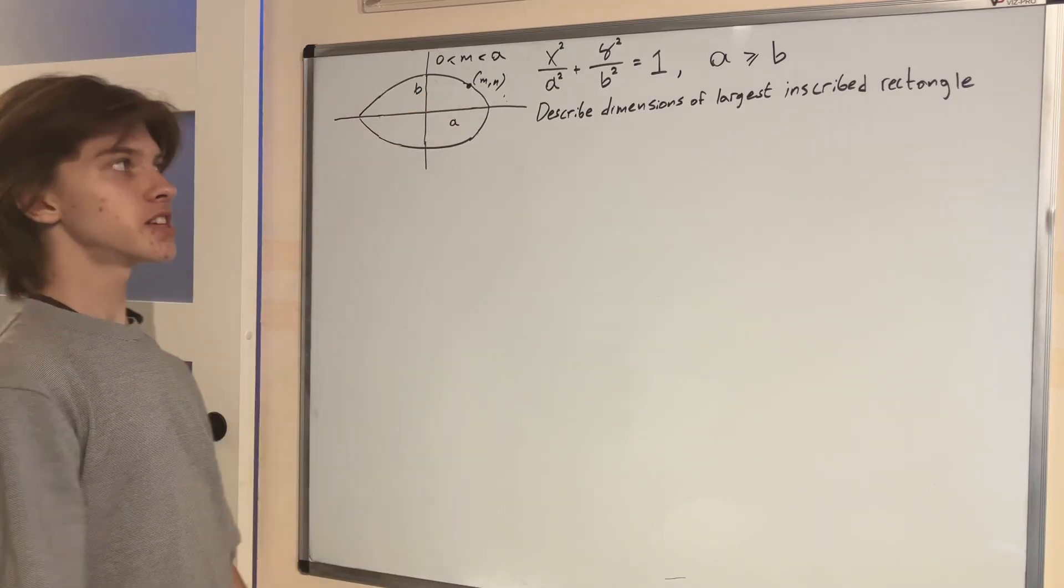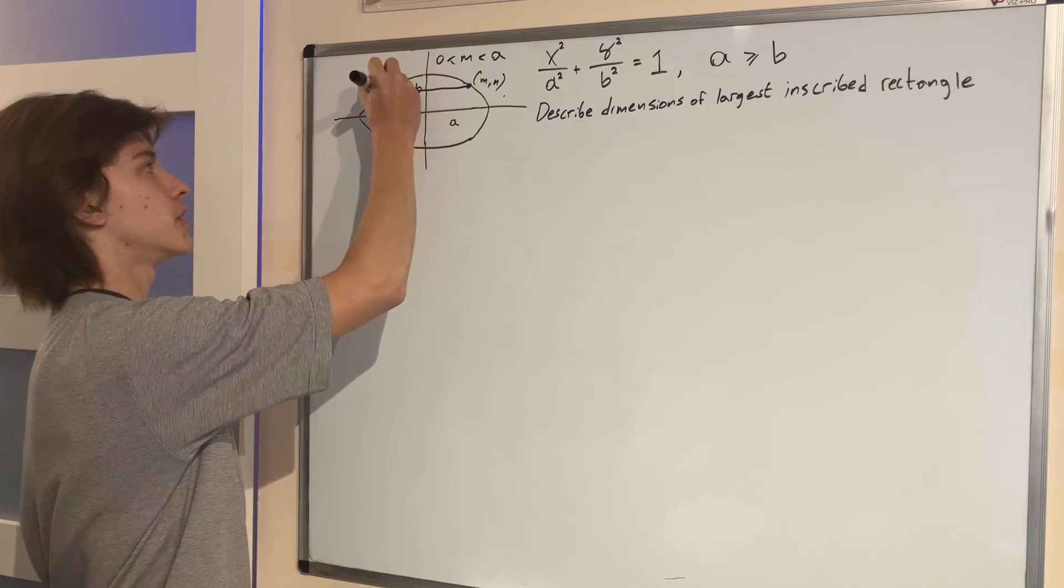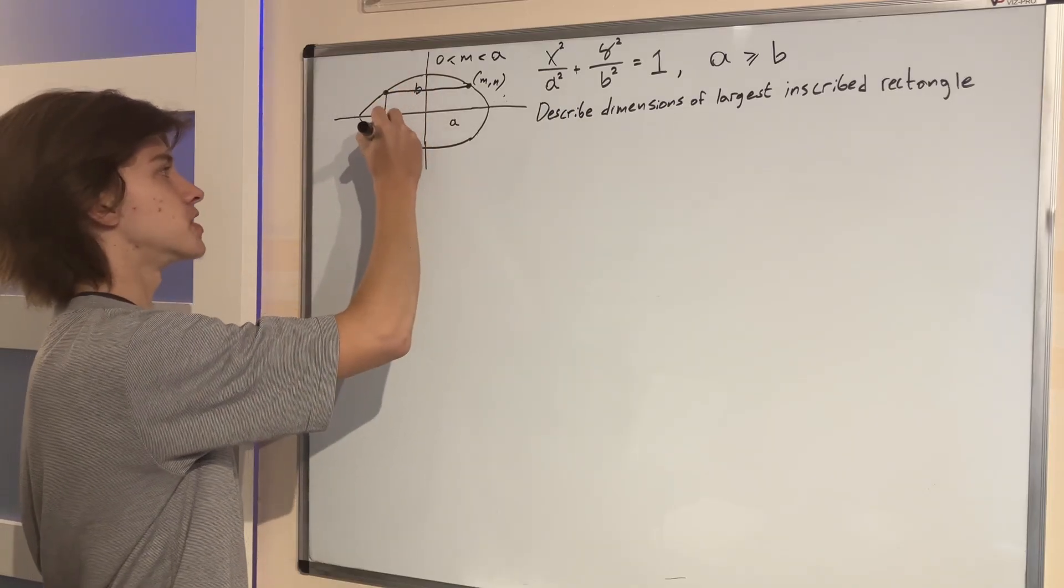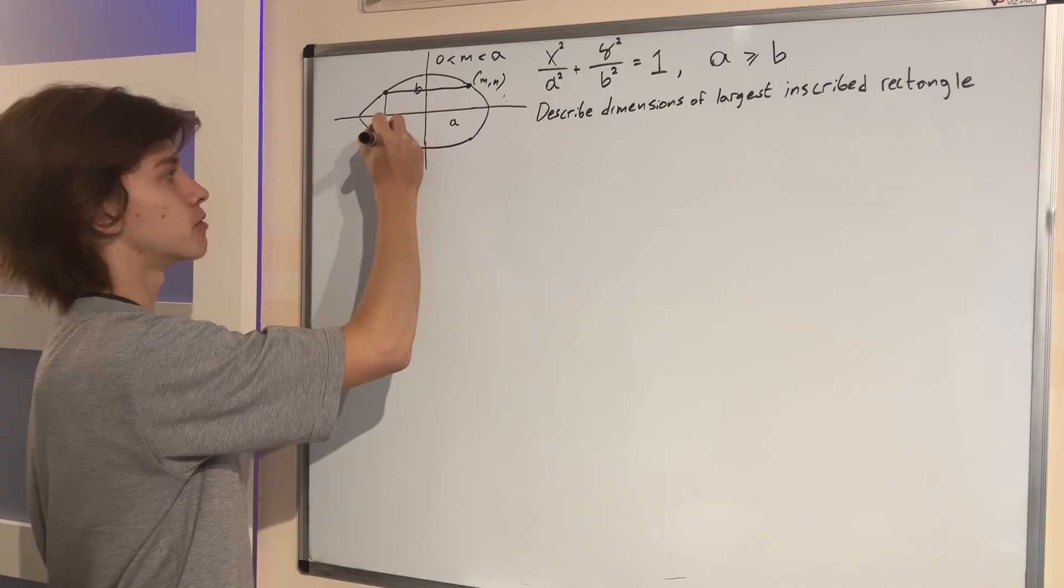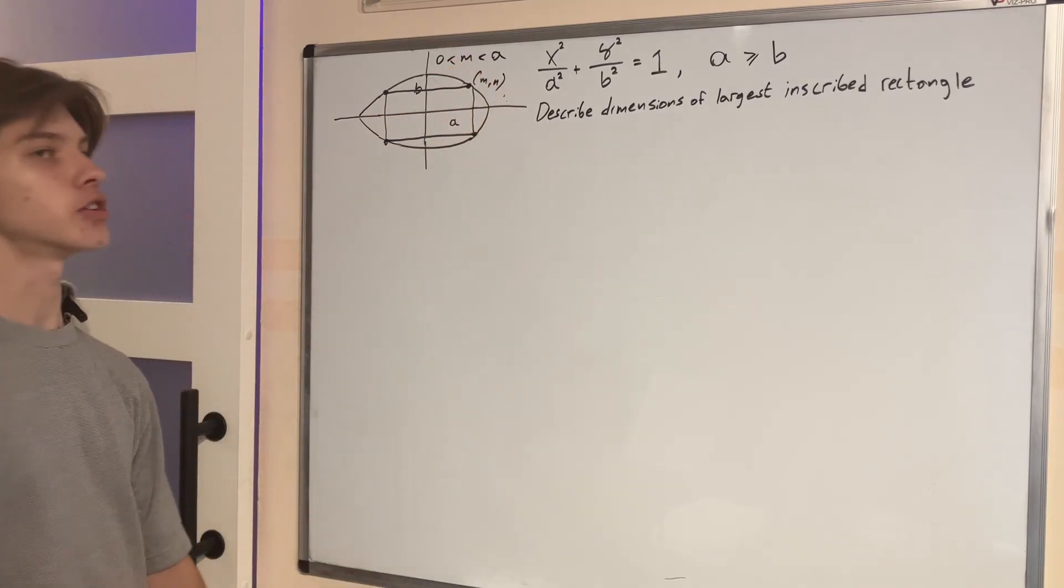So it's going to be lying on this quarter right here of the ellipse. Now to construct a rectangle, we simply draw a straight line to the left and the other vertex will be right here. Then we draw a line down, it will be right here. Then we draw it to the right. And then we return and we have made our rectangle.